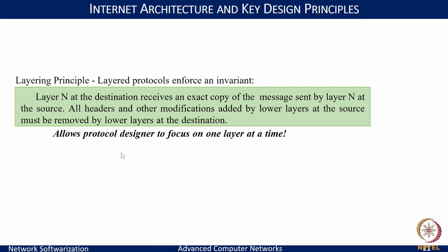The layering principle also enforces an invariant: layer N at the destination receives exactly the same copy of the message sent by layer N at the source. This means all headers and modifications made by lower layers are independent and do not impact what layer N receives at the other end. This flexibility allows variants of lower-layer services to operate independently, and the simplicity and flexibility of building layers independently resulted in what we see today as our network stack.